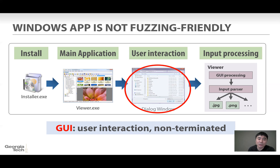The first challenge is the GUI. Since most GUIs require several user interactions, the fuzzer needs to emulate those same user interactions. Also, the GUI is not terminated automatically. For example, even though you open the file and finish processing the image using the image viewer, the image viewer still remains open, waiting for the next user interaction. This means it's difficult to determine when to terminate the program.